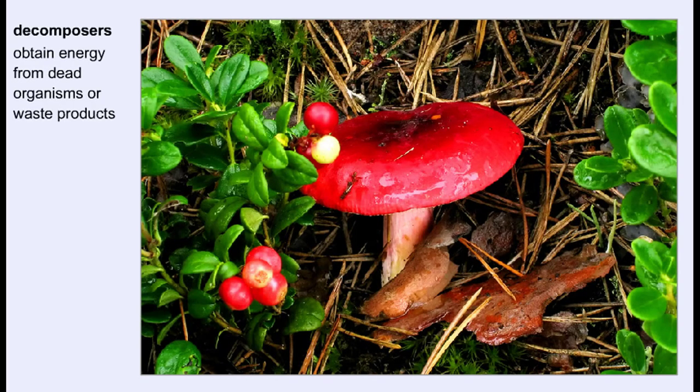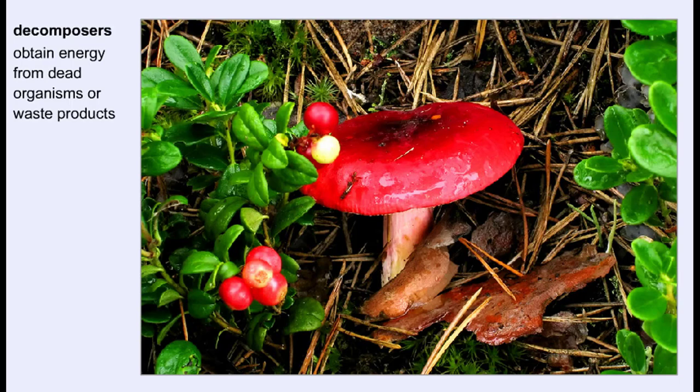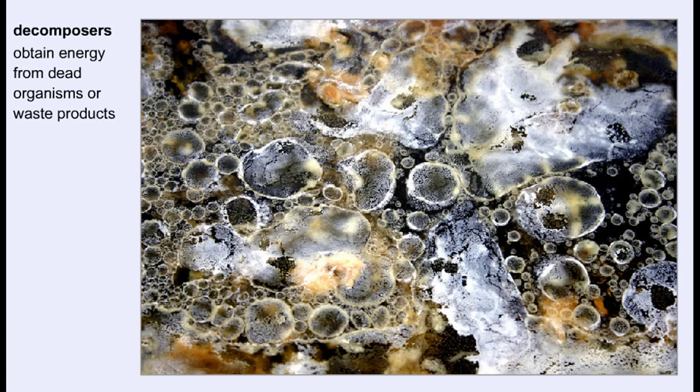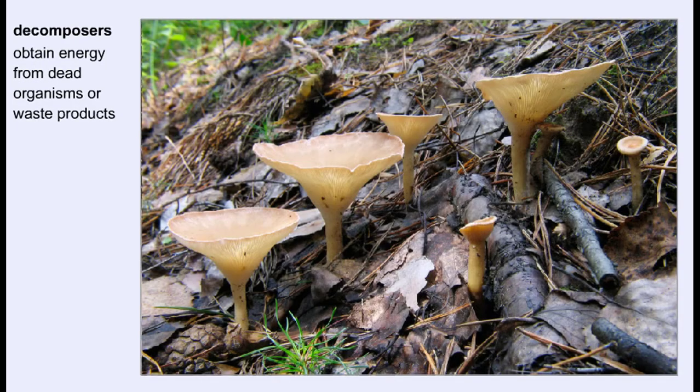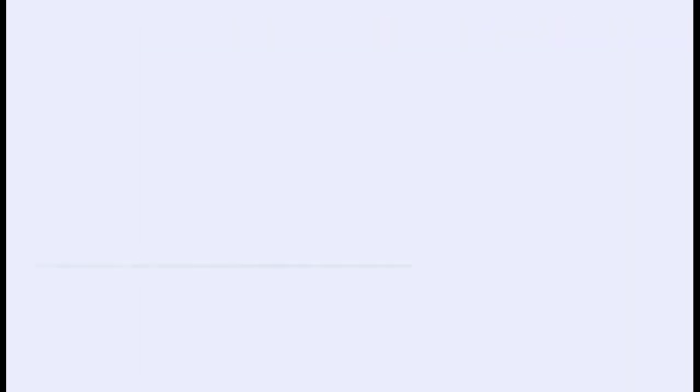Decomposers get their food from breaking down the matter in dead organisms or waste products. Decomposers ensure that the energy and nutrients that are locked in dead matter are recycled back into the environment. Fungi and most bacteria are examples of decomposers. All of these classifications can be used to generate a flowchart of energy from one group of organisms to another.